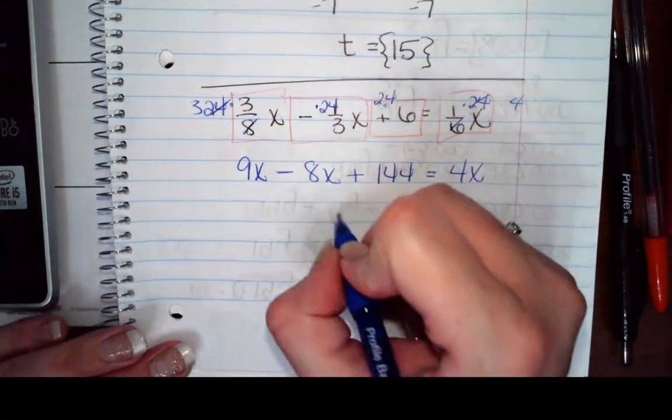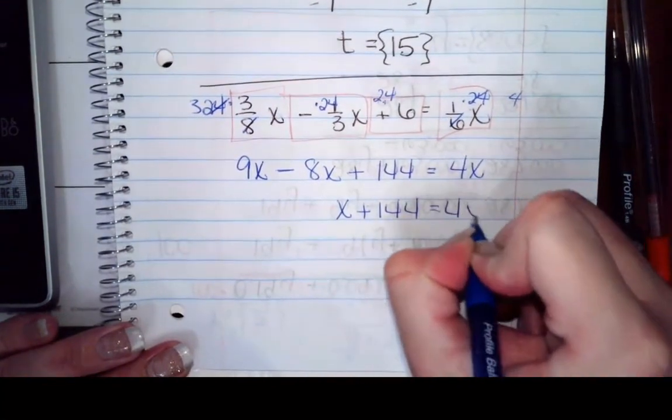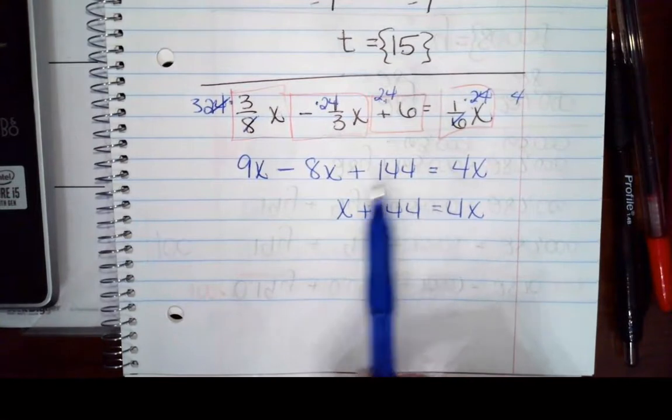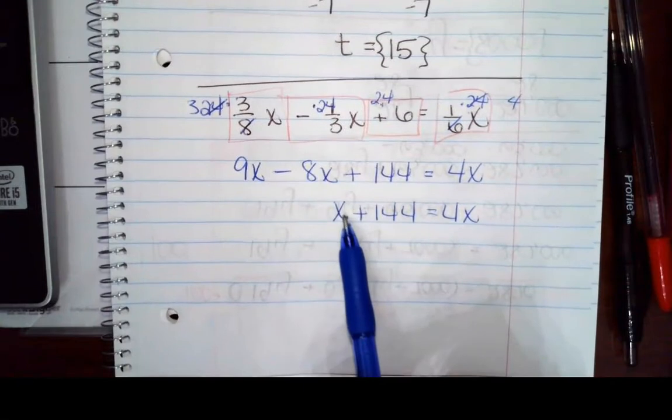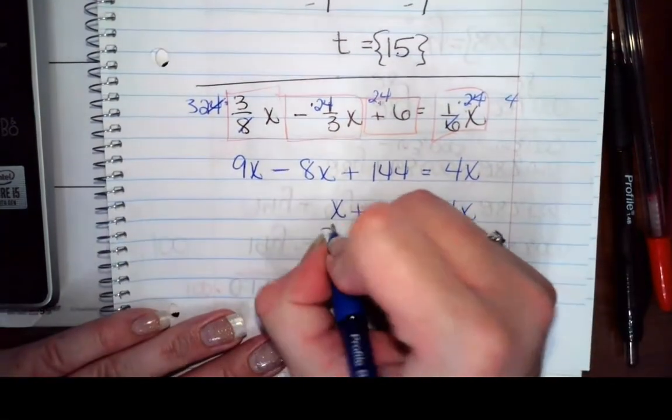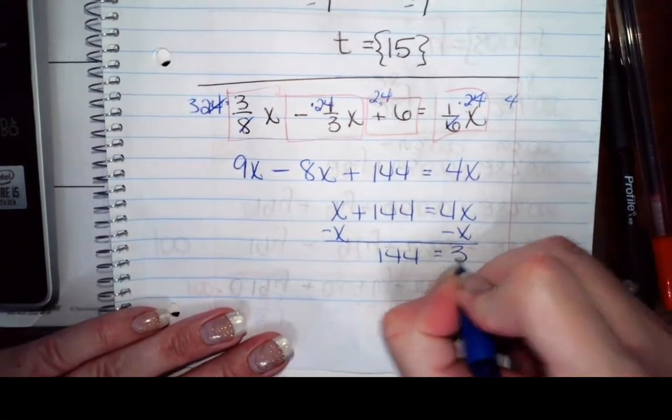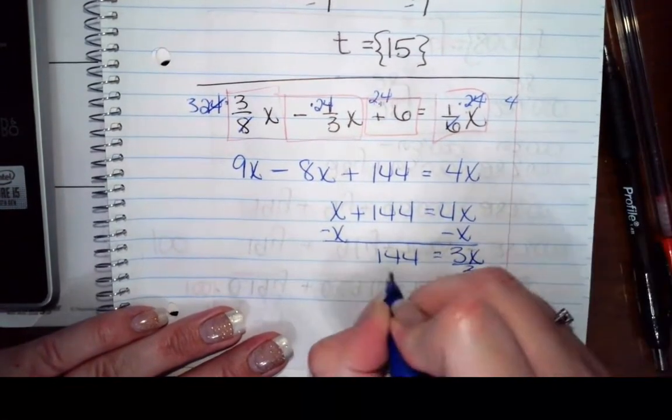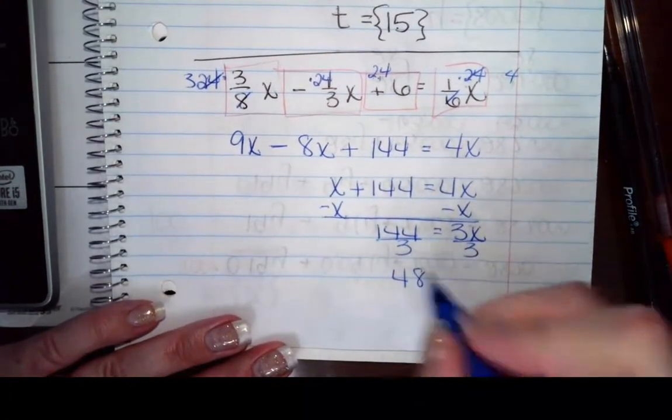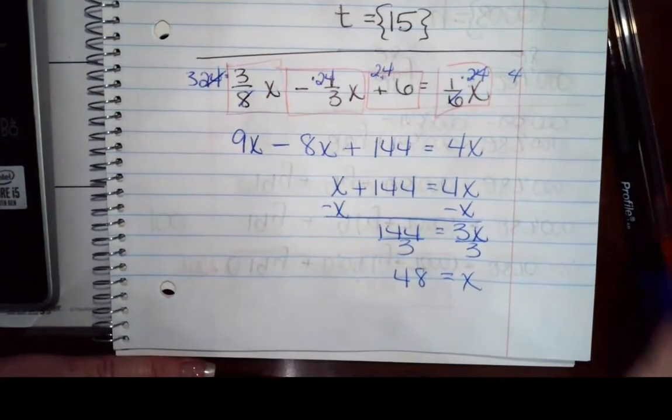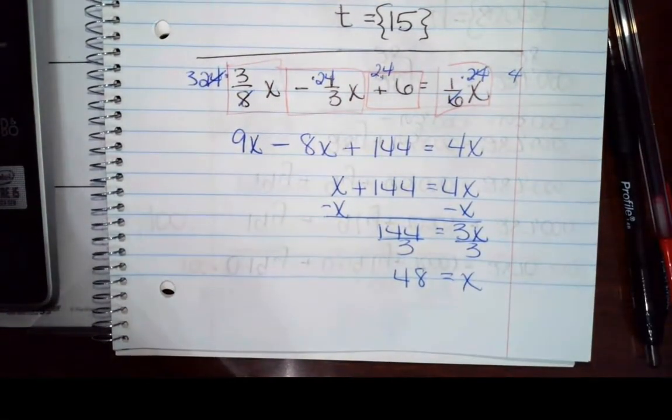I'm going to combine like terms. That gives me a single x plus 144 is 4x. So again, my constant is already by itself. I'm going to go ahead and move this one over. Even if it was larger, I'd move it over. So change his sign, and that gives me 144 equals 3x. So divide both by 3, and I get 48. So you have x equals 48.